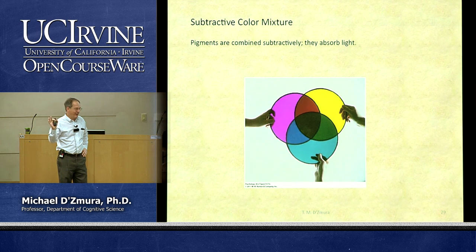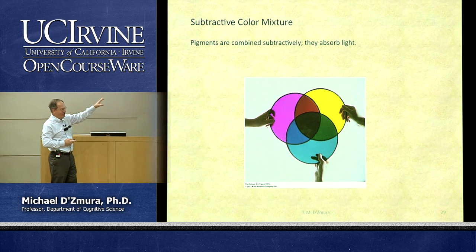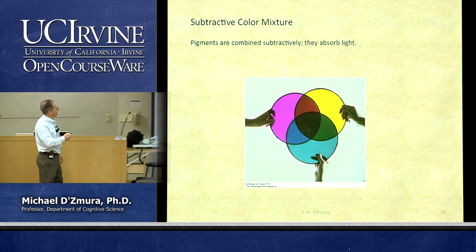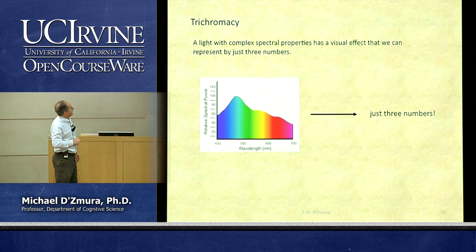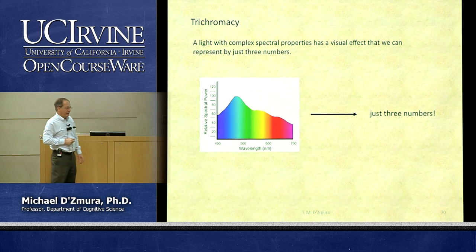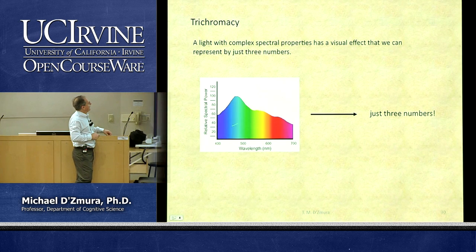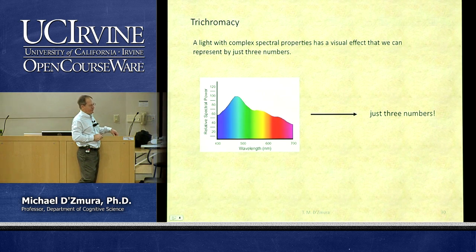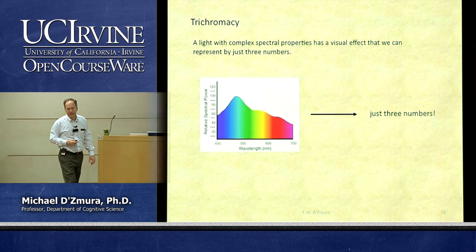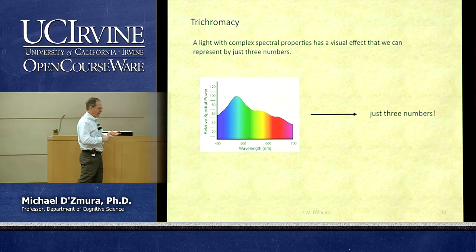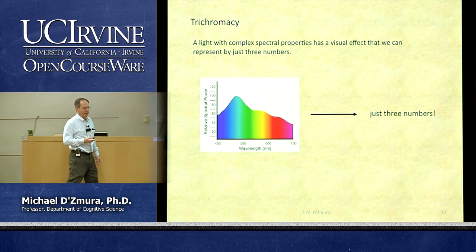Additive and subtractive color mixture are really different from one another. When we add lights, the mixture is brighter. When we subtract light using pigments, we need to think it through more carefully. Because we have just three kinds of cone photoreceptor, we can characterize any light by just three numbers: the responses of the long, medium, and short wavelength sensitive photoreceptors — our three kinds of cone.